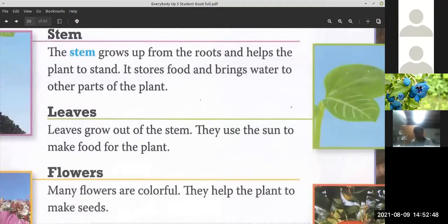Then we have the leaves. Leaves go out of the stem. They use the stem to make food for the plant. For the plant. Okay.